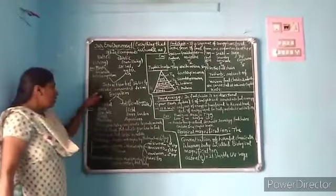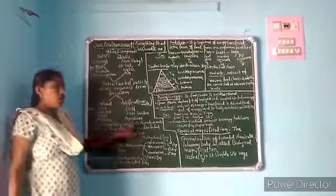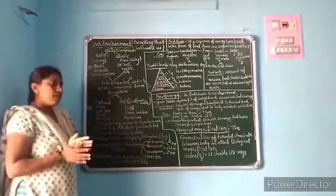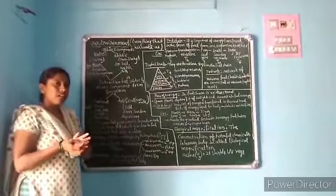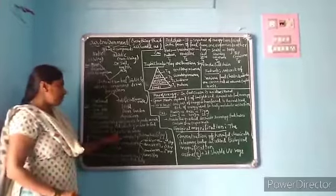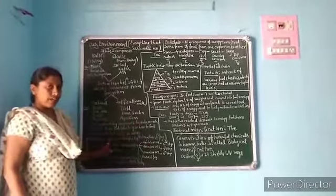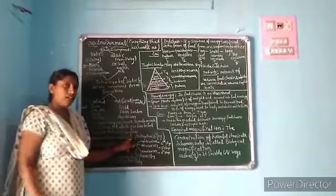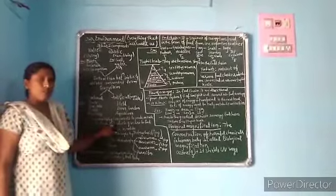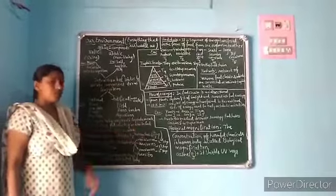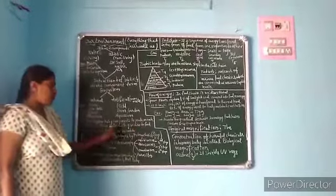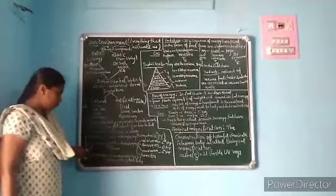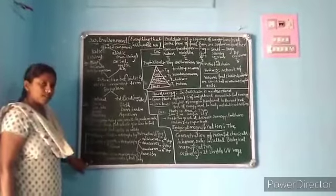In an ecosystem, living components depend on one another for their survival — each organism feeds on another organism, and this constitutes the food chain. Food chain interactions constitute the food web in nature. In the food chain there are producers, consumers, and decomposers.